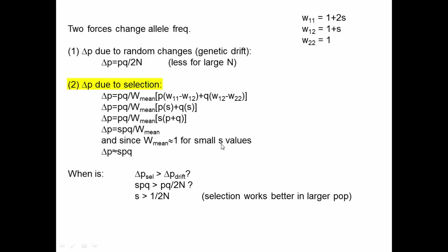Assuming we're working with small values of S, the mean fitness is about 1, so the change in allele frequency is approximately s·p·q. The change due to drift per generation is pq/2N, and the change due to selection per generation is s·pq. Selection is larger than drift when s·pq > pq/2N. The p and q cancel, giving s > 1/2N.